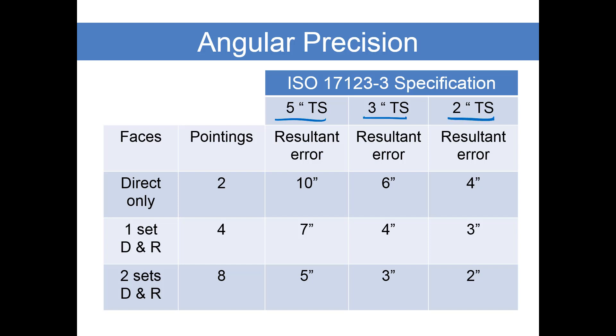Here we've got a 5 second total station, a 3 second total station, and a 2 second total station. With a 5 second total station, if we turned one set of direct and reverse we got 7 seconds. We got 5 seconds when we turn two sets. But if you turn direct only, the error in your angle is going to be 10 seconds.